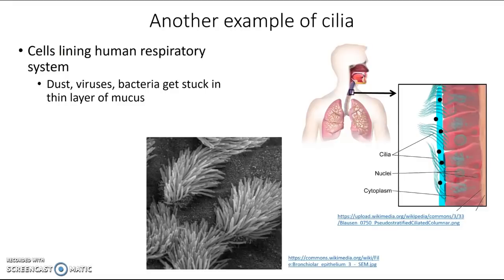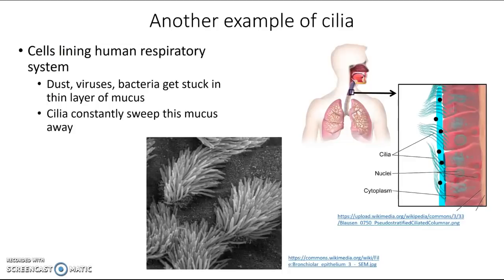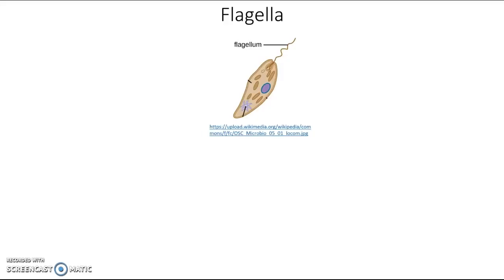If that mucus just stayed there it would get clogged really fast, leaving all sorts of junk in your respiratory tract. So what these cilia do is constantly sweep the mucus upwards to get rid of the stuff stuck in it. As that mucus gets swept away, the cells make new fresh mucus so you can breathe clearly and continue to be protected from things coming in from the air.